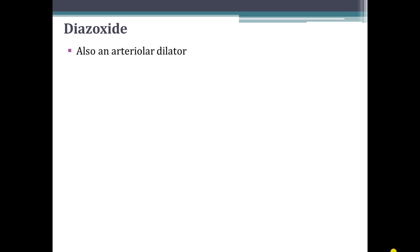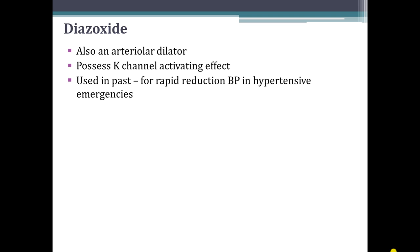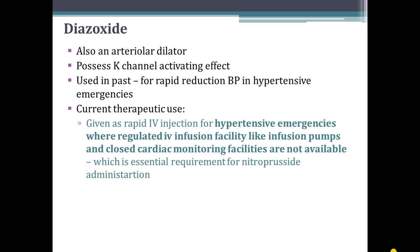The next drug is diazoxide. It also acts as an arteriolar dilator and possesses a potassium channel activating effect. It was used in the past for rapid reduction of blood pressure in hypertensive emergencies. Its current therapeutic use is rapid IV injection for hypertensive emergencies where regulated IV infusion facilities — such as infusion pumps and close cardiac monitoring — are not available, which are essential requirements for nitroprusside and other emergency antihypertensive drugs.